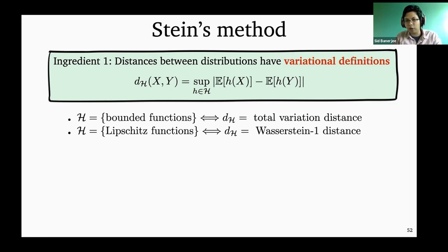The problem is if we wanted to use something like this — let's say we wanted X to be the steady state distribution of some complicated Markov chain but we don't really know what the steady state distribution is — then it's not obvious how we would plug it in and do something with it.